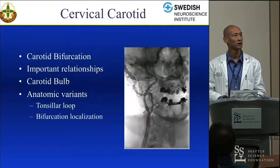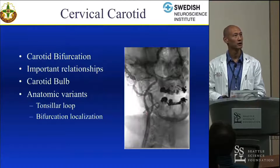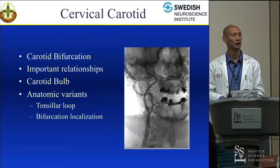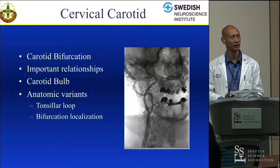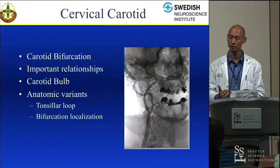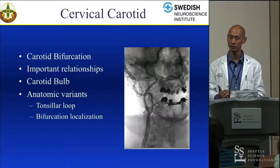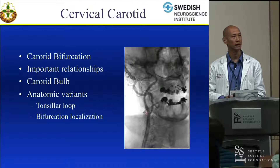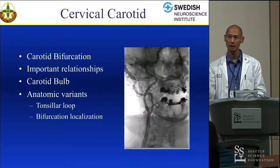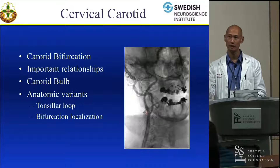Everyone knows the cervical carotid and the carotid bifurcation are really important locations — you've all been involved in CEAs. Knowing the important basic relationships: the carotid is posterior and lateral. For angiographic views, we typically do ipsilateral anterior oblique. So if it's the right ICA you want to look at, with the AP camera it's useful to look at it with an RAO view. As you see in this picture, it splays the ICA and accentuates the ICA's posterolateral approach relative to the external carotid artery.